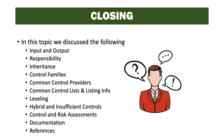In closing, this topic covered a lot of information about control inheritance, common control providers, and the documentation and requirements that a common control provider or CCP must fulfill to have their controls available for implementation in the organization. This is really one of the most important parts of the RMF, as it reduces the number of controls a system owner is required to implement when fielding a system. Topics discussed include inputs and outputs, responsibility, inheritance, control families likely for common controls, common control providers, developing common control lists, leveling, hybrid and insufficient controls, control and risk assessments, and documentation.